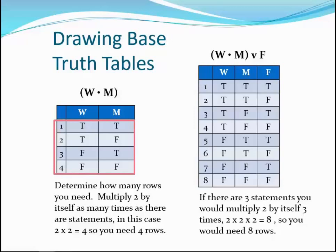In the table on the left, there are four rows needed, so write two true and two false values in the first column, then alternate one true and one false in the second column. The compound statement on the right has three different statements — W, M, and F — so you'll need eight rows. The first column will have four true and four false values, the second column alternating two true and two false values, then true, false, true, false in the third column until all eight rows are filled. Now you have base tables showing all possible truth values for both compound statements.